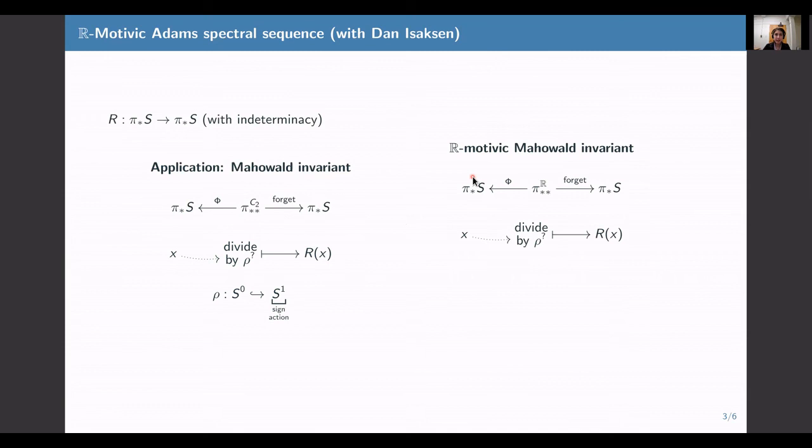In our paper, Dan and I construct a variant of the Mahowald invariant that involves lifting your homotopy class to an R-motivic class instead of lifting to a C2-equivariant homotopy class. Other than that, the construction proceeds pretty much analogously. There's an R-motivic element rho that plays the role of the C2-equivariant element rho.